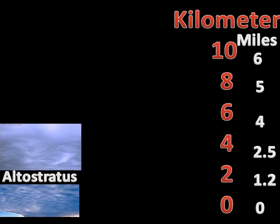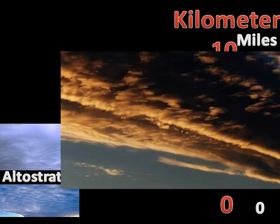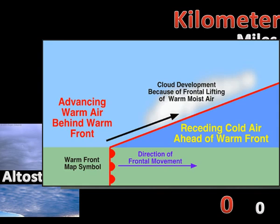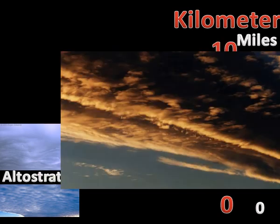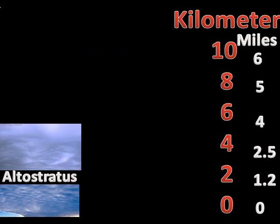Altostratus is a cloud classified by a generally uniform gray or bluish-gray sheet or layer. Lighter in color than nimbostratus and darker than cirrostratus, the sun can be seen through thin altostratus, but thicker layers can be quite opaque. They can look similar to lower-altitude stratus clouds. Altostratus clouds are formed by the rising of a large air mass that condenses, and can produce light precipitation — if precipitation increases, the altostratus may thicken into nimbostratus. They occur at heights between 2 and 6 kilometers.